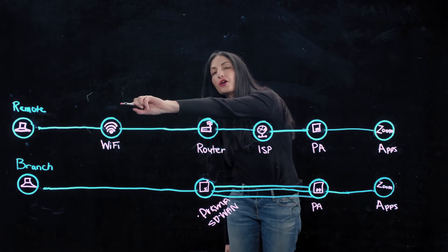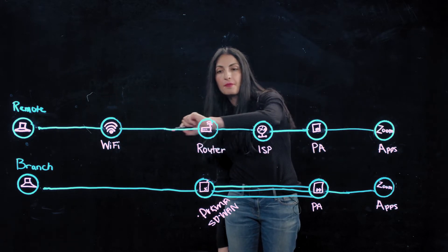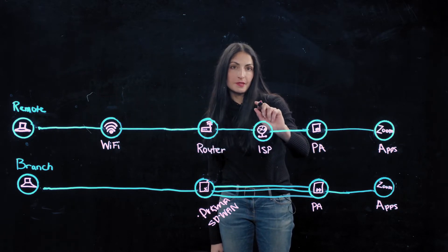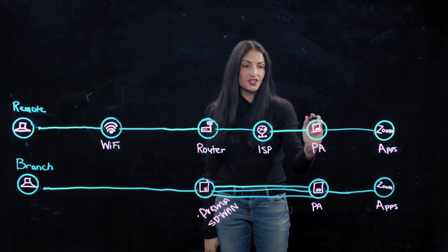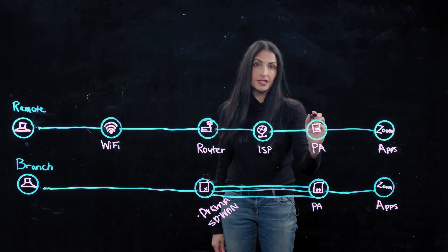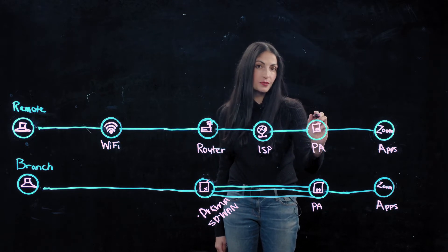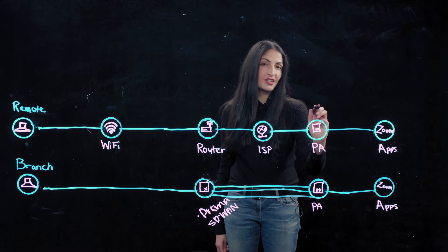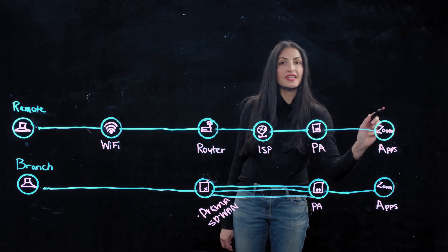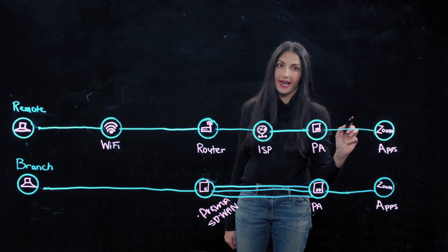I've got to connect to my home Wi-Fi, my home router, my ISP, to the security gateway — which in this case is Prisma Access, where all the security magic happens — and then I get to the application I want to access.